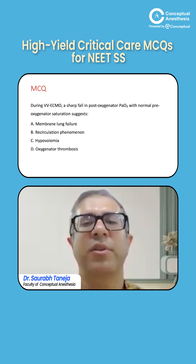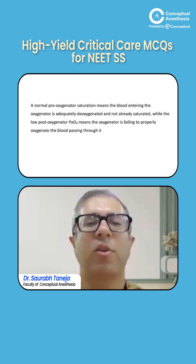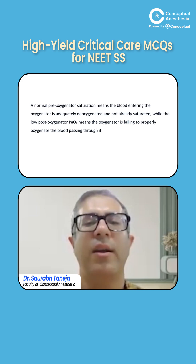But the post-oxygenator PO2 should be very high. If there is a sharp fall, that means there is some issue with the oxygenator, which is also called the membrane lung. Normal pre-oxygenator saturation means the blood entering the oxygenator is adequately deoxygenated and not already saturated. While a low post-oxygenator PO2 means the oxygenator is failing.